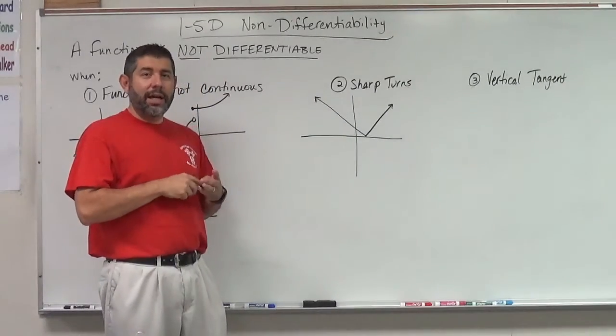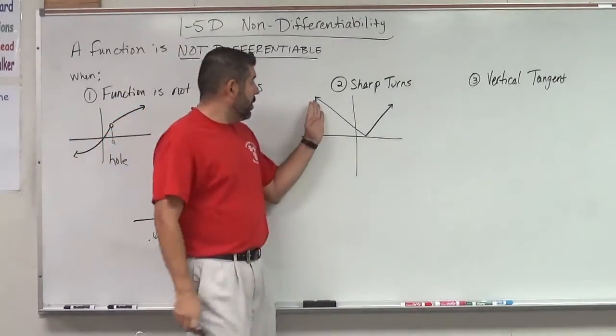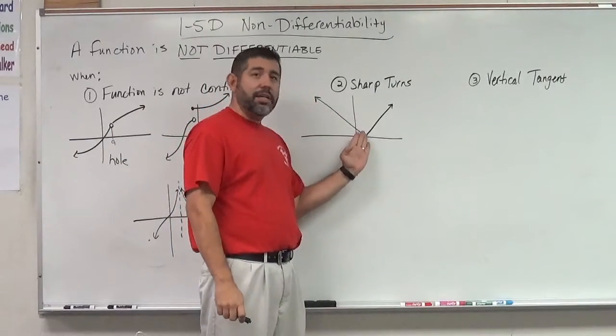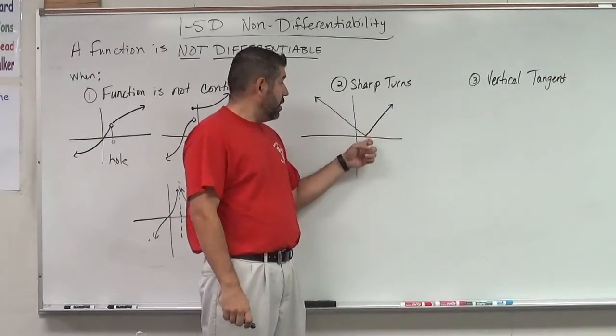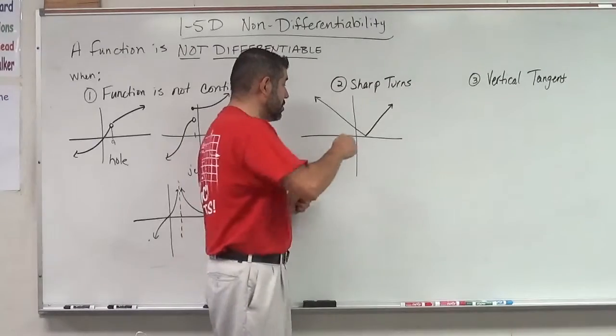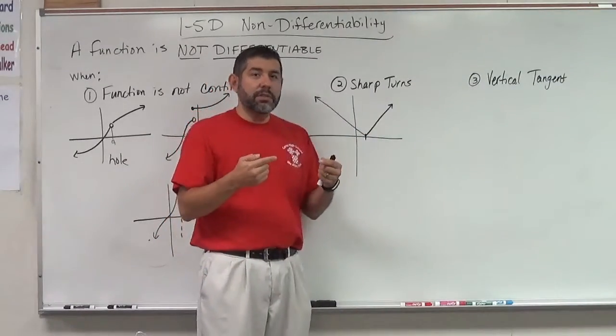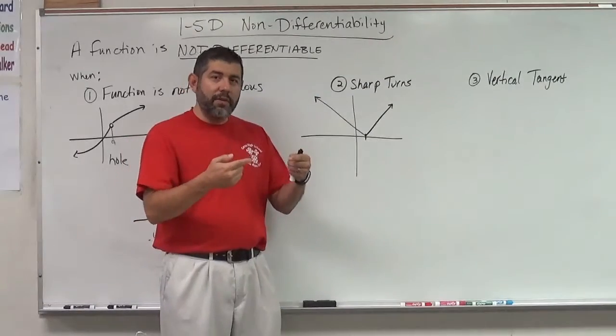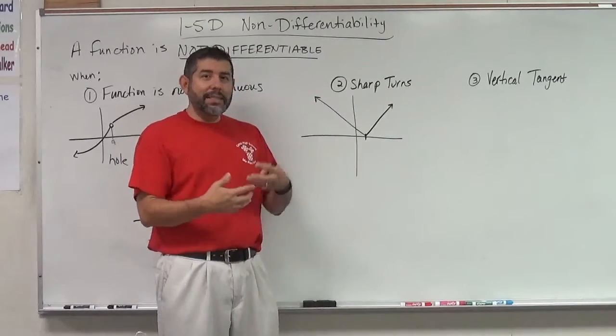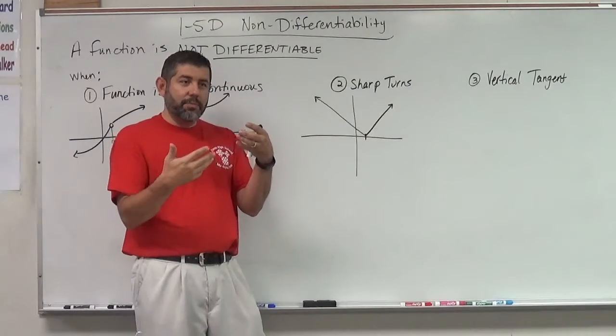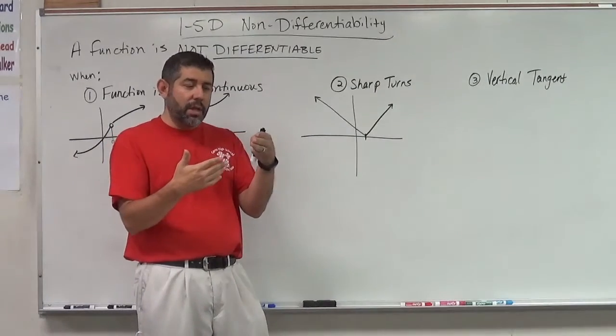Now just a quick thought about why this is true. We have such a change in slope that at that point, at the sharp turn, since the derivative is a limit, that limit derivative, the derivative that's a limit as x approaches the number,